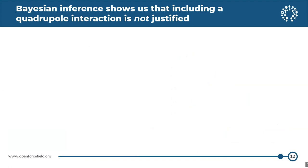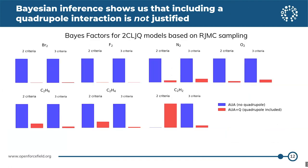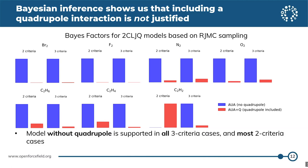Looking across a whole bunch of different cases and molecules, we find that in general the quadrupole interaction is not justified. For almost all of these, the model without a quadrupole is preferred. The one case where the model with a quadrupole is preferred is acetylene in the two-criteria case; in the three-criteria case, it goes back to preferring a model without a quadrupole.